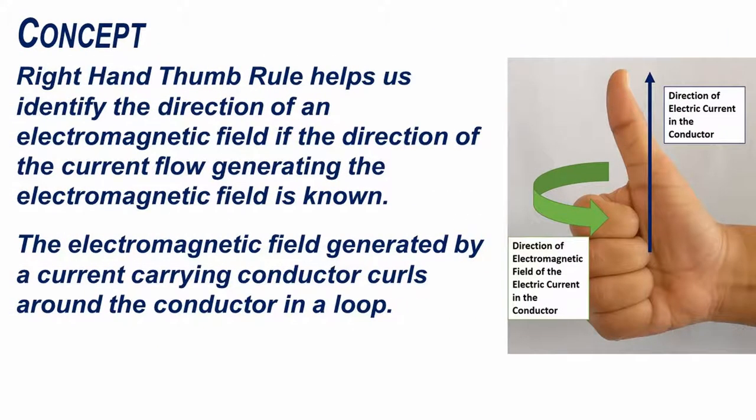Right hand thumb rule helps us identify the direction of an electromagnetic field if the direction of the current flow generating the electromagnetic field is known. The electromagnetic field generated by a current carrying conductor curls around the conductor in a loop.